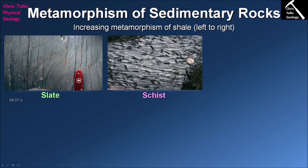As our clay minerals alter to give us mica minerals, the new mica minerals will naturally grow at 90 degrees to the direction of compression — so if we're squishing the rock from top to bottom, the mica crystals will naturally grow left to right. The alignment of these mica crystals gives us a very distinctive type of cleavage referred to as a schistosity, which is a type of foliation.